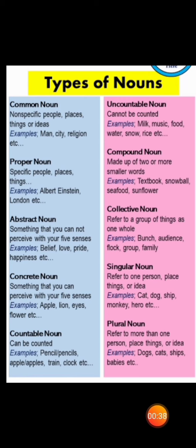Next is abstract noun. What is an abstract noun? Abstract noun is something that you cannot perceive with your five senses. For example, belief, love, pride, happiness etc.